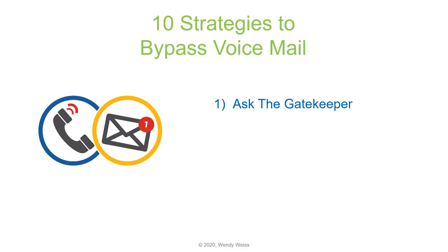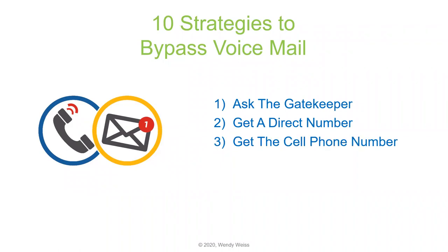First, ask the gatekeeper. If you reach a gatekeeper and they say your prospect's not available, be a detective and ask some questions: When is he done with that meeting? What time does she come in in the morning? When is the best time to reach him? Try whenever that gatekeeper suggests. Also, get a direct number — if you have a general company number, ask if she has a direct line so you don't have to bother them again.